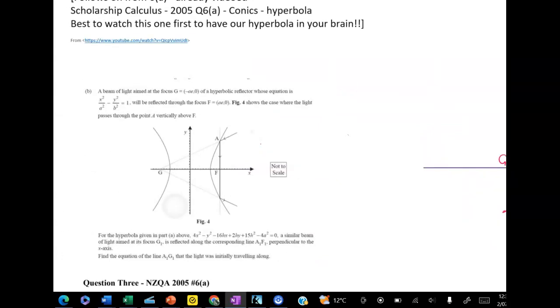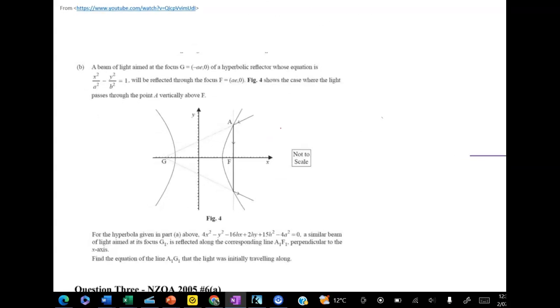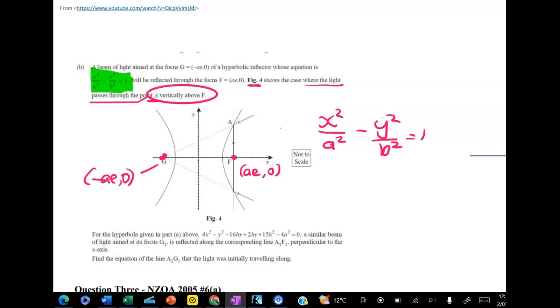We're given some general setup for a beam of light being aimed at the focus of a hyperbolic reflector and we're given the standard equation for a hyperbola. So this picture here is for a general hyperbola. If we aim a beam of light at this focus here at point g from anywhere it will get reflected through the focus. And this example shows the case where the light is coming through a specific point, the point a which is vertically above f. Here's my foci at f so f has got coordinates ae, 0 and g has got coordinates negative ae, 0.